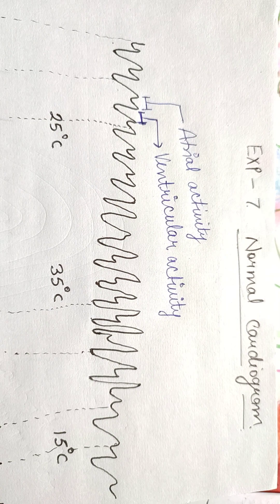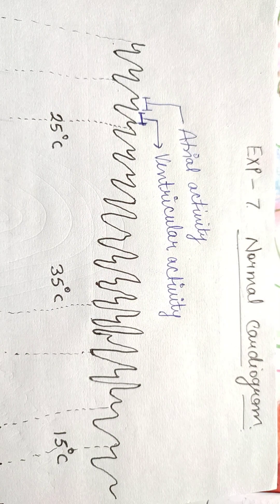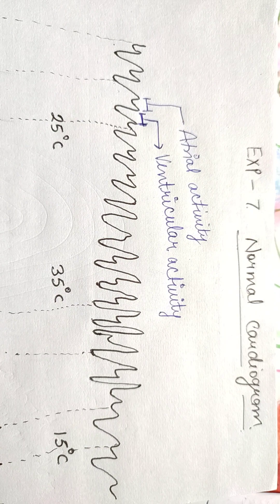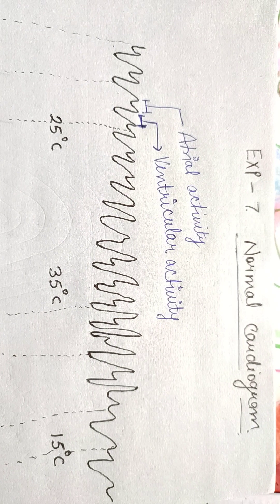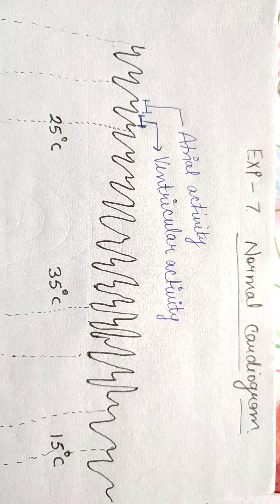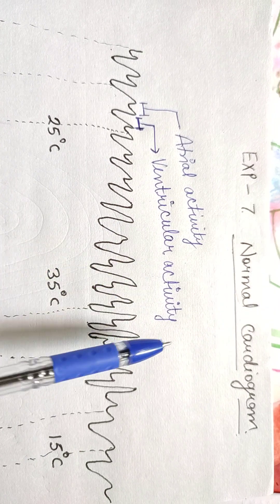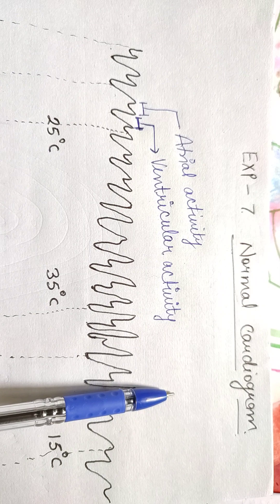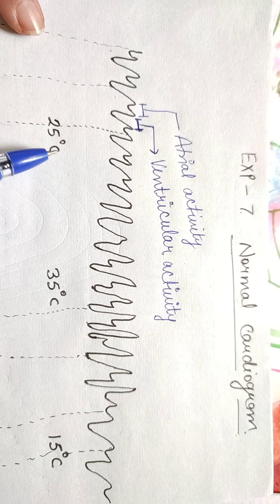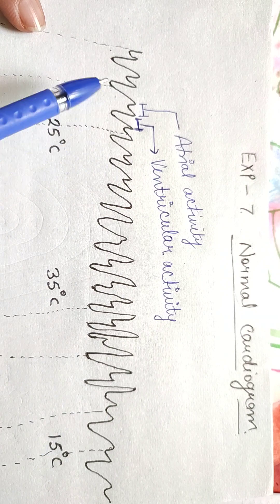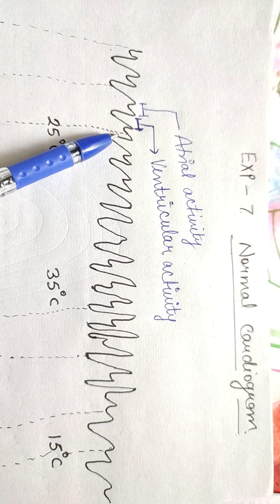Welcome to the channel. In this video we'll be talking about one more amphibian experiment. We have already covered all the skeletal muscle graphs and different viva questions related to them. You can visit the amphibian playlist if you want to go through all those. Today we are starting the cardiac one. There are three to four cardiac graphs which you can have in your exam. This graph is about normal cardiogram — how that was recorded — and one more thing you can get in this graph is the effect of temperature.